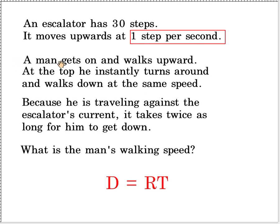And it says here that a man gets on and walks upwards. So he's going to add to the speed of this upwards moving escalator. He walks upwards. At the top, he turns around instantly and walks down at the same speed. So there's no time allotted for him pivoting and walking down. We simplify the problem and say he turns around instantly and walks down. And then because now he's traveling against the escalator's current, it takes him twice as long to get down.